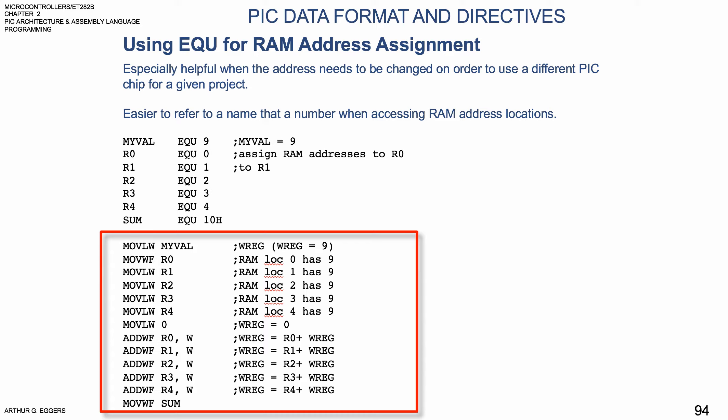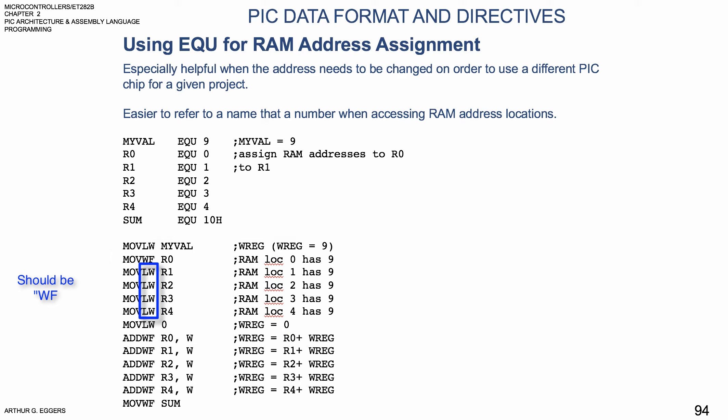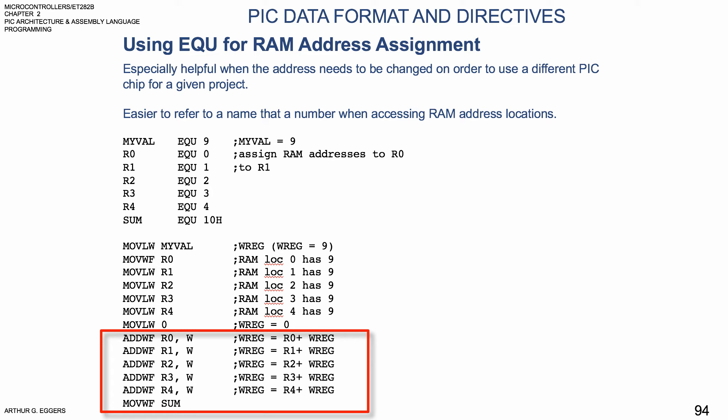In the next example, we move a literal value to the working register — MyVal — so the working register has a value of 9 in it. For each of the steps R0, R1, R2, R3, and R4, we are taking the RAM location given as 0, 1, 2, 3, 4, and loading the working register value of 9 into it. So all of those locations end up having a 9 loaded into them just by using the MyVal equate. Then we do a move LW 0 to clear the register, and add each of those values from R0 through R4.